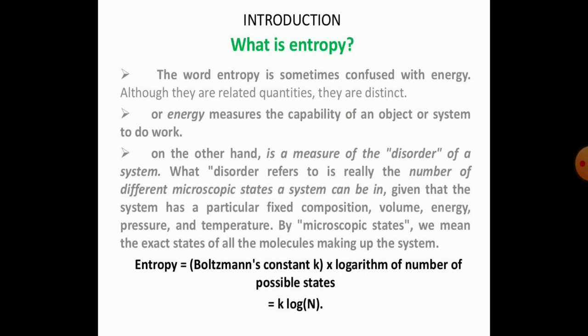Given that a system has a particular fixed composition, volume, energy, pressure and temperature, the microscopic state refers to the exact state of all the molecules making up the system. Entropy is given by the Boltzmann constant multiplied by the logarithm of the number of possible states.